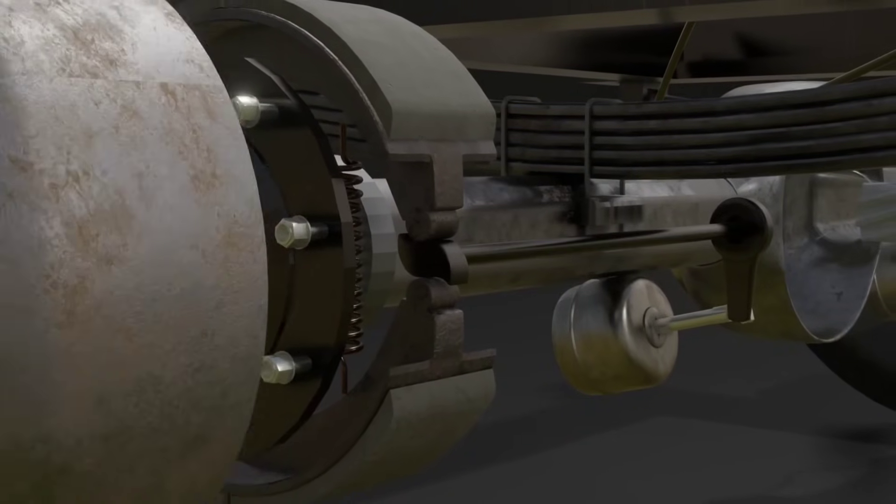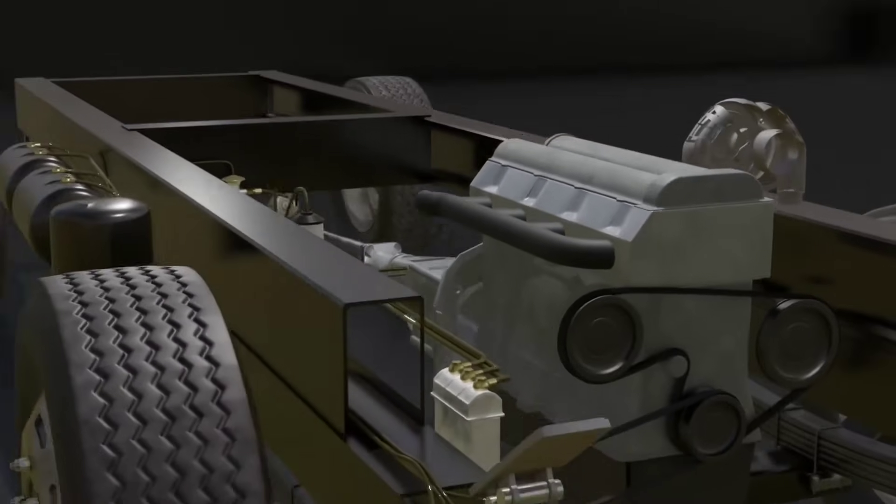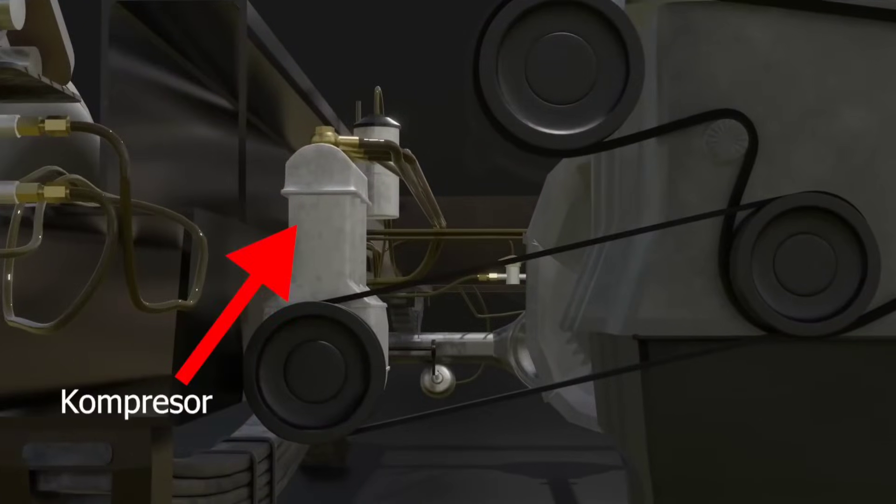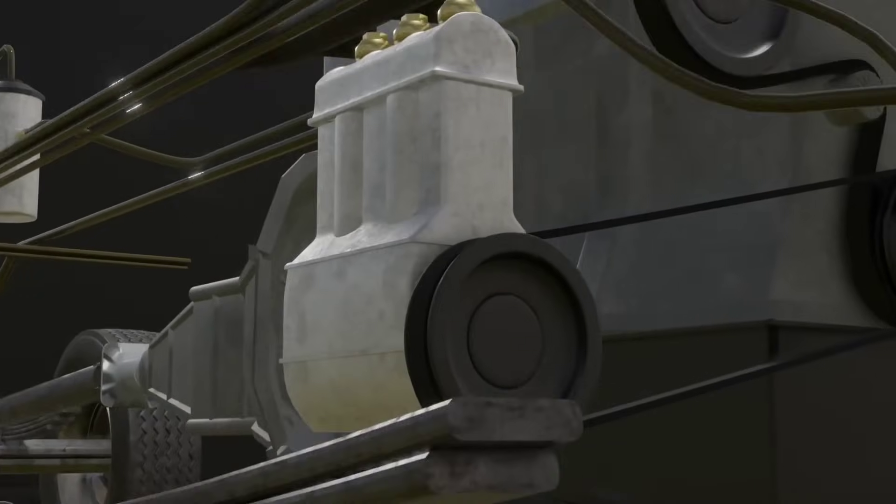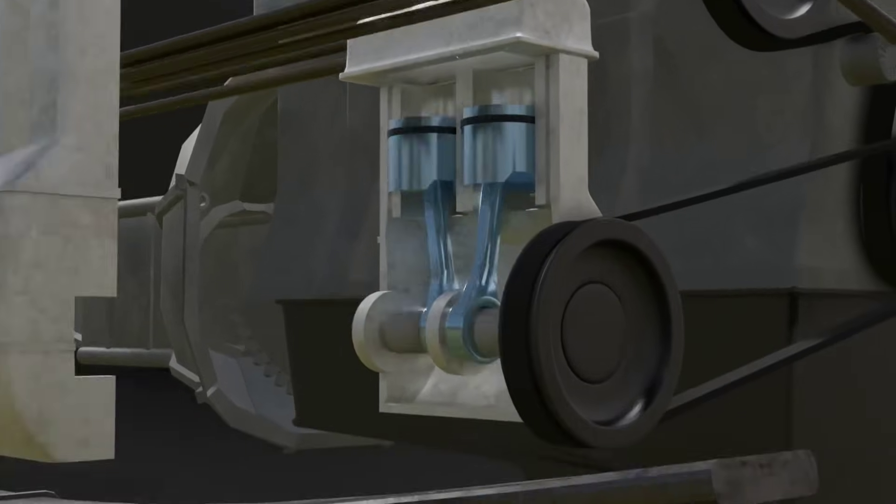To discuss the wind brake, we start from the engine part. Here there is an air compressor. Typically, these compressors are connected to the engine pulleys via a belt fan. Its function is to increase the wind pressure in the wind brake system.